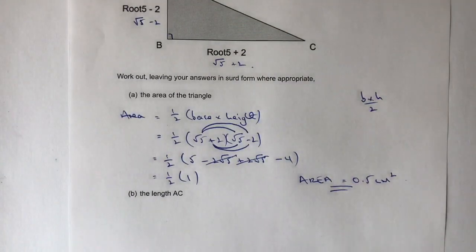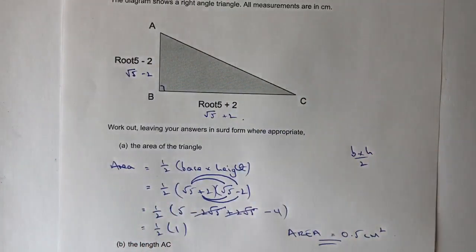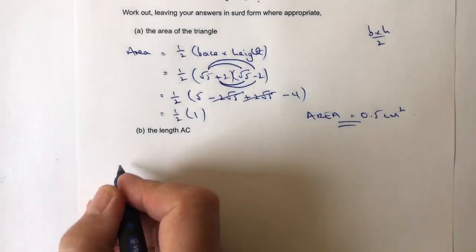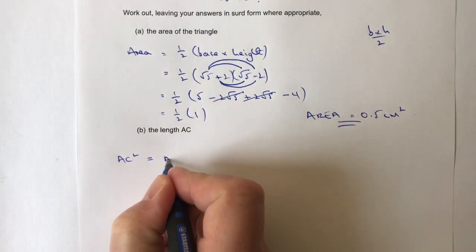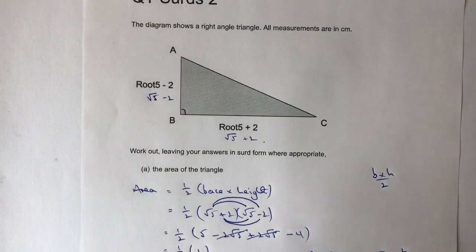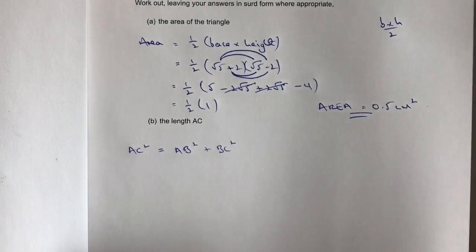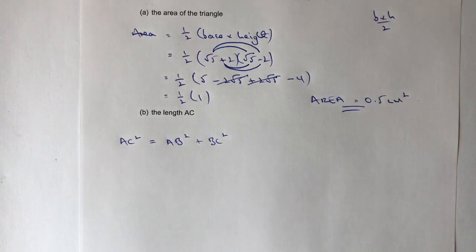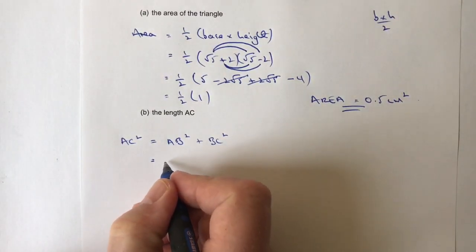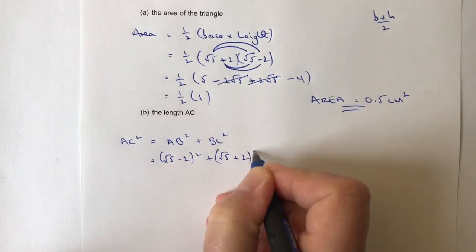Now let's look at the length AC — that's the length along the hypotenuse. Because it's a right angle triangle we can use Pythagoras' theorem. So we say AC squared equals AB squared plus BC squared. AB squared is the vertical height, which is (√5 minus 2) squared, and BC squared is (√5 plus 2) squared.